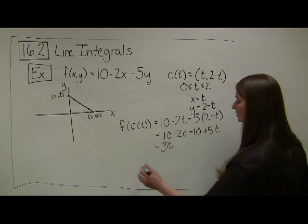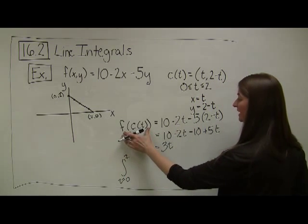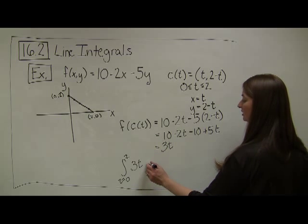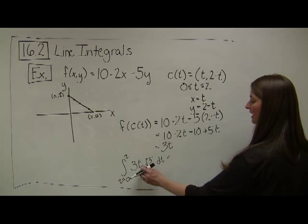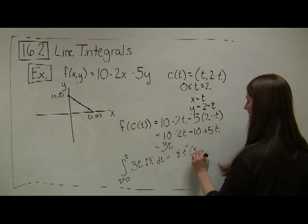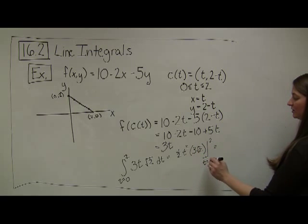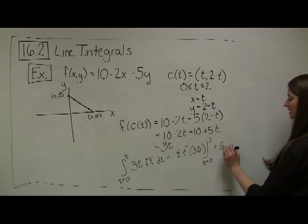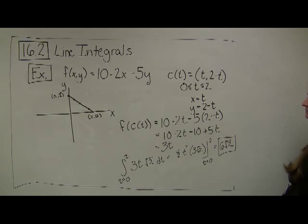My final integral is the integral from t = 0 to 2 of f(c(t)) · |c'(t)| dt = ∫₀² 3t · √2 dt. Since √2 is a constant, integrating gives (1/2)t² · 3√2, evaluated from 0 to 2. Plugging in: (1/2)(4)(3√2) = 2 · 3√2 = 6√2. Plugging in 0 gives 0. So the answer is 6√2.